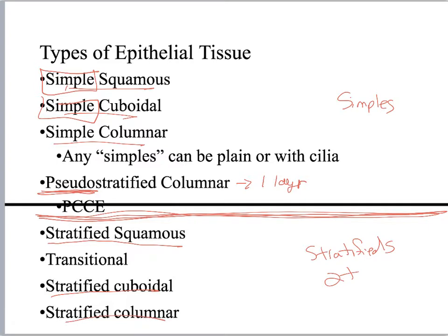It's important to always put the simple in front because down here I've got stratified squamous, stratified cuboidal, stratified columnar. So if I'm on a quiz and I ask you what type of epithelium this is and you say cuboidal, you haven't answered the question because I don't know that you know the difference between simple cuboidal and stratified cuboidal. You need to always put the entire name.